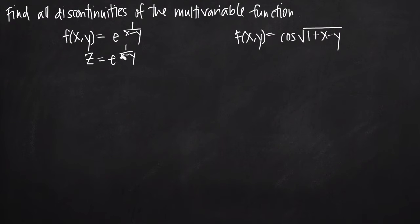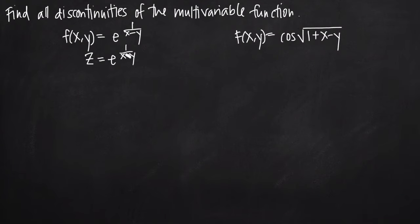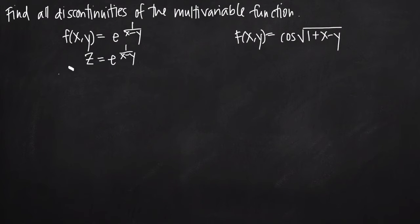1 over x minus y is a different story. We have a rational function here — a fraction where the numerator and the denominator are both polynomial functions. We know that the denominator of a rational function can't be equal to zero; otherwise, there's a discontinuity at that point.